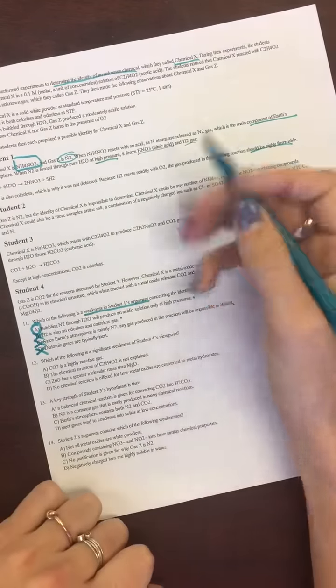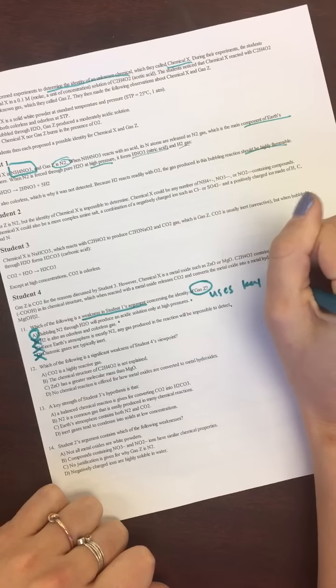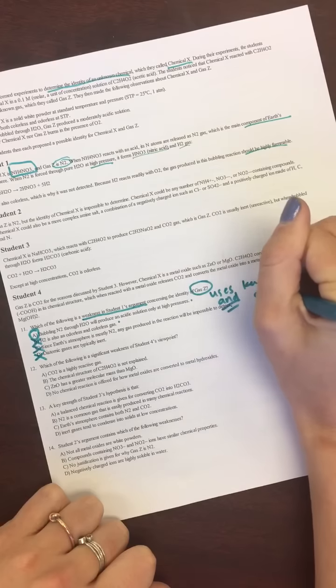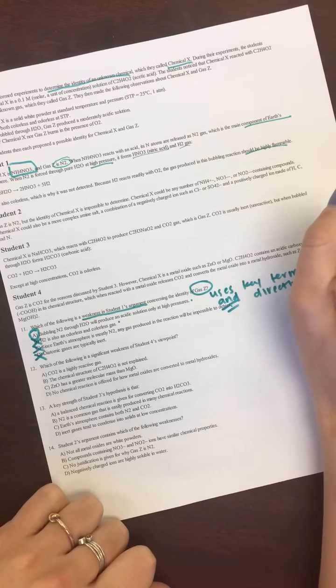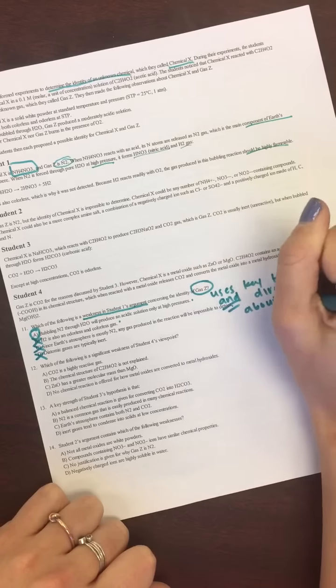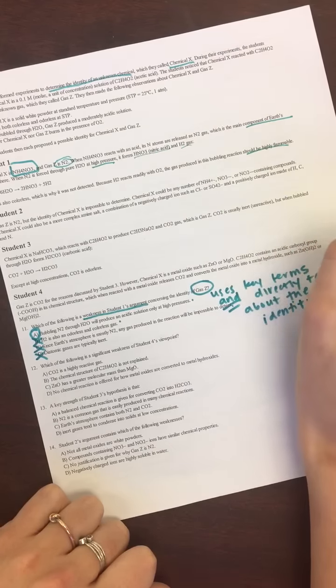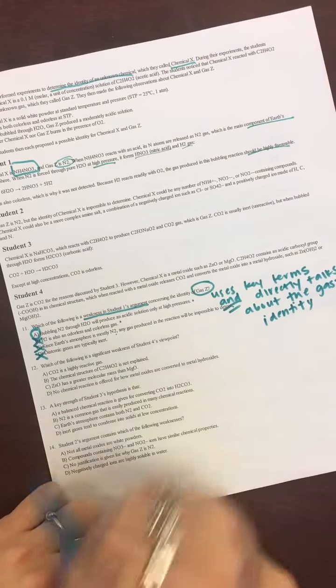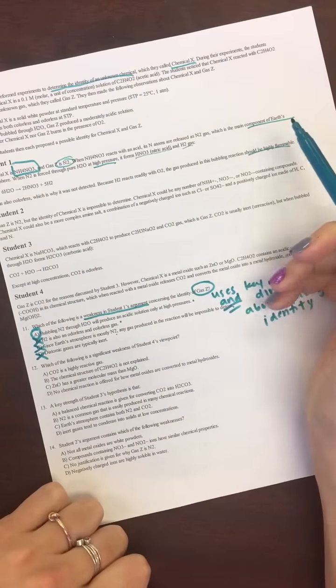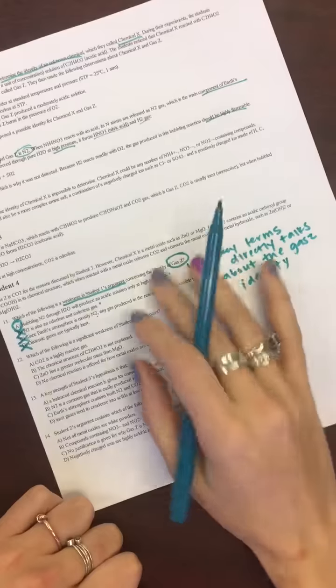And H2 is also an odorless and colorless gas. So, that doesn't really tell us much about gas Z, because it just says it's a byproduct, so therefore, our answer is going to be A. So, A is the answer here that uses key terms and directly talks about the gas Z identity, right? So, this is between A and C are the only ones that talk about N2, right? And just because the atmosphere has N2 in it, that doesn't mean that you can't detect it in a lab.